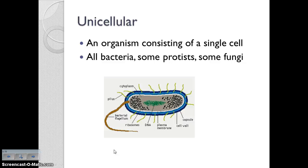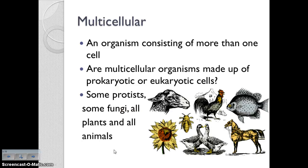A couple of terms you should know: unicellular and multicellular. An organism consisting of a single cell is unicellular — uni means one. All bacteria are unicellular; all prokaryotes are unicellular. There are some protists that are unicellular, and some fungi like yeast that are unicellular. An organism consisting of more than one cell is called multicellular — multi means many. Since all prokaryotes are unicellular, multicellular organisms have eukaryotic cells: some protists, some fungi, and all plants and all animals.